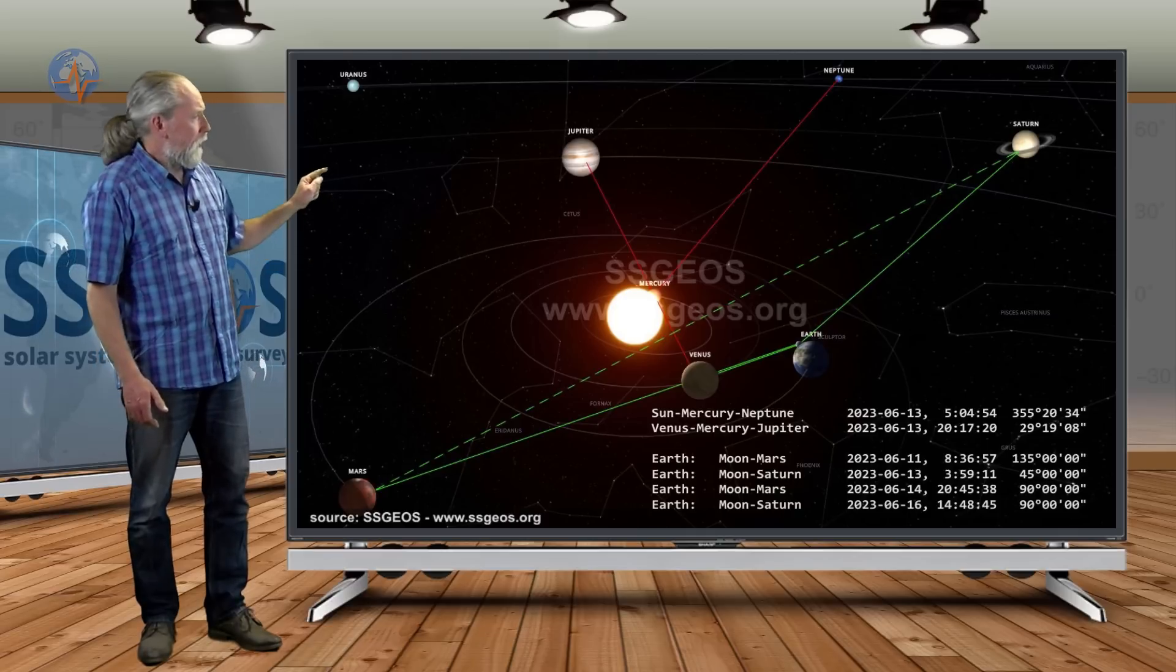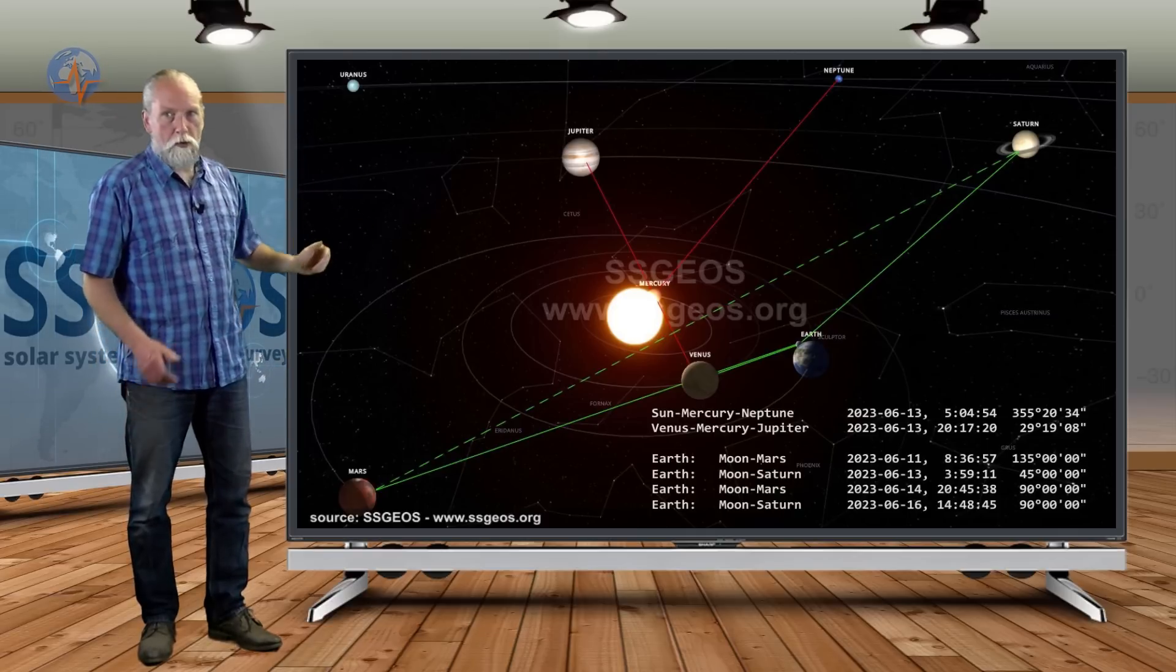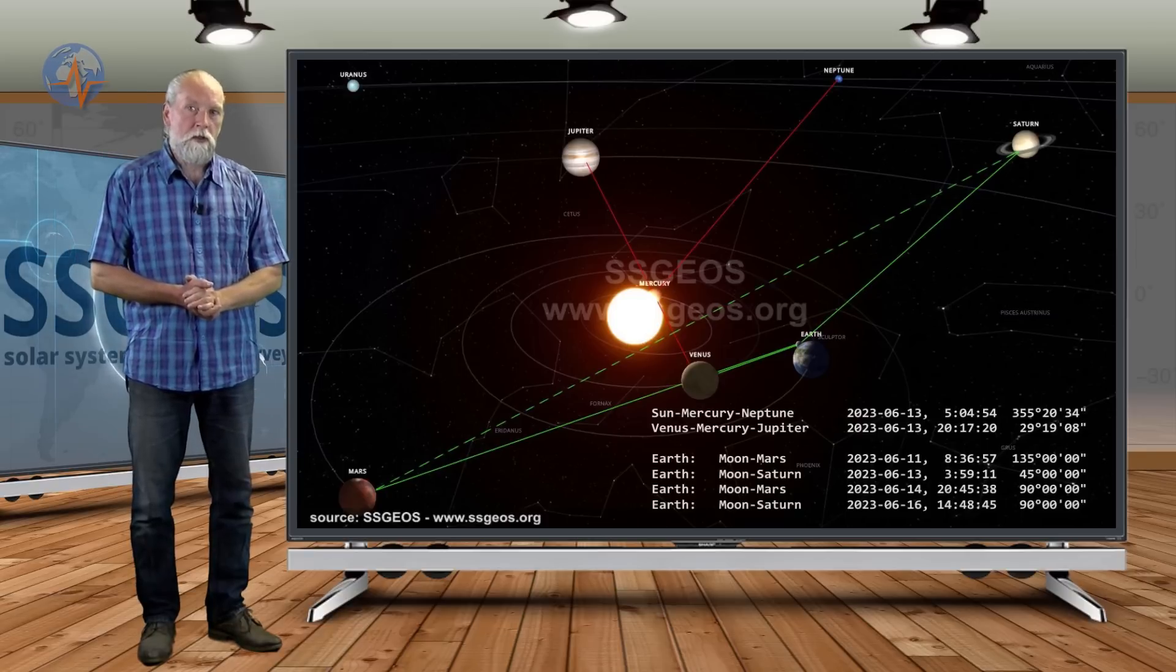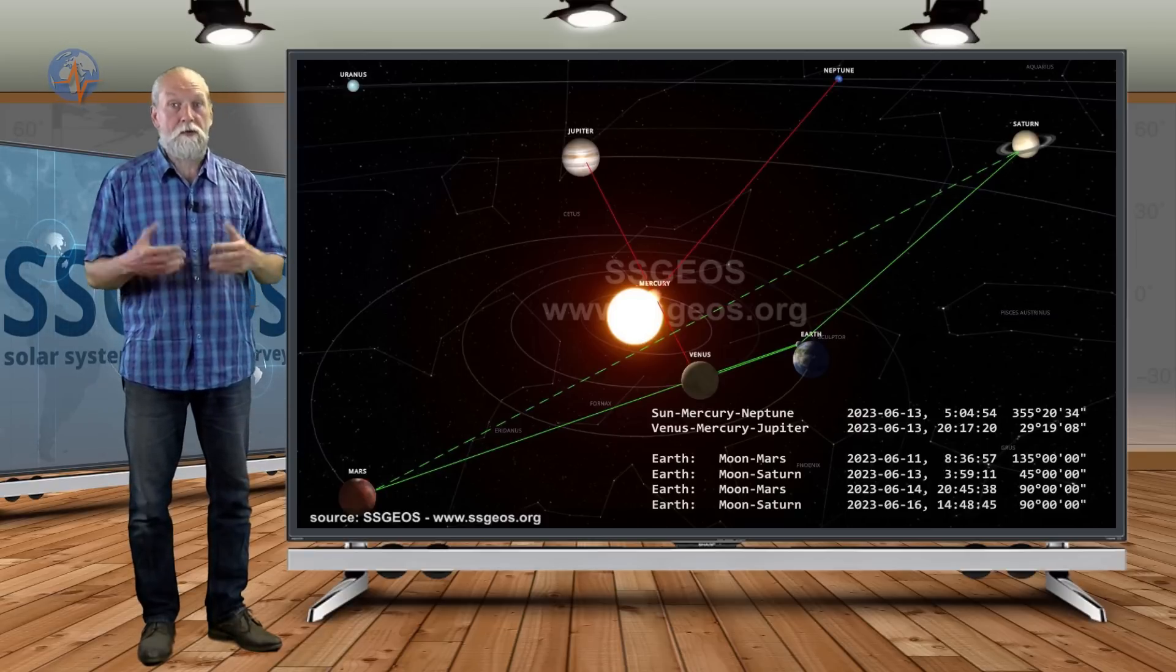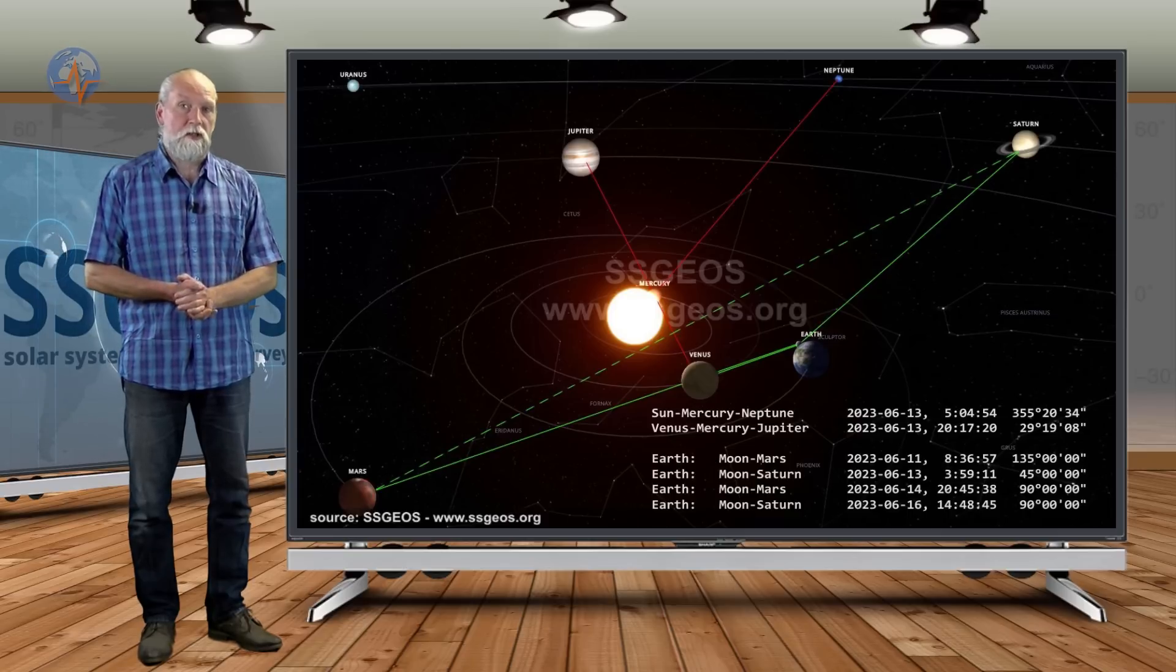But first let's have a look at the convergence of planetary conjunctions tomorrow. What that is going to do. I expect seismic increase. Whether or not it is going to reach magnitude 7, that is the question. Because that depends on the stress levels in the crust.